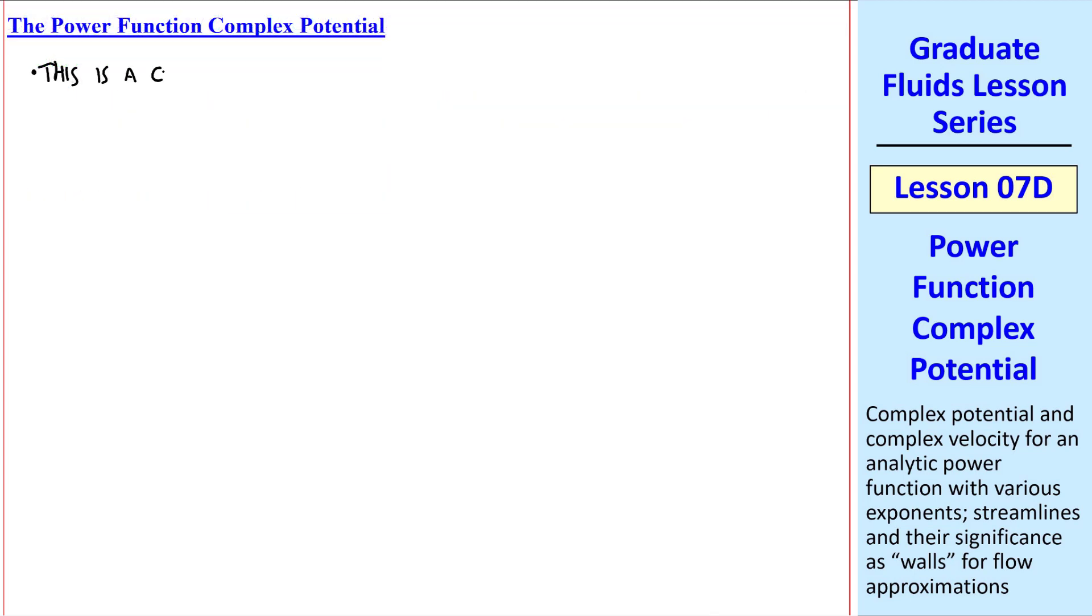I'll start by saying that this is a completely inverse method. In other words, we just pick an analytic function. In this case, w of z equals some constant a times z to exponent n. a and n are real constants. This is called the power function.